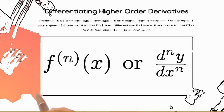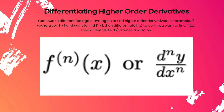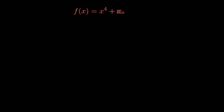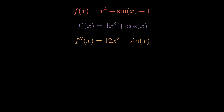Now let's learn how to differentiate higher order derivatives. This is relatively simple — you just continue to differentiate again and again. To find the second derivative, differentiate your function twice. Differentiating once gives the first derivative, then differentiating again gives the second derivative. For the third derivative, differentiate the second derivative once more. For example, given f(x)=x⁴+sin(x)+1, the first derivative is 4x³+cos(x), and the second derivative is 12x²−sin(x).